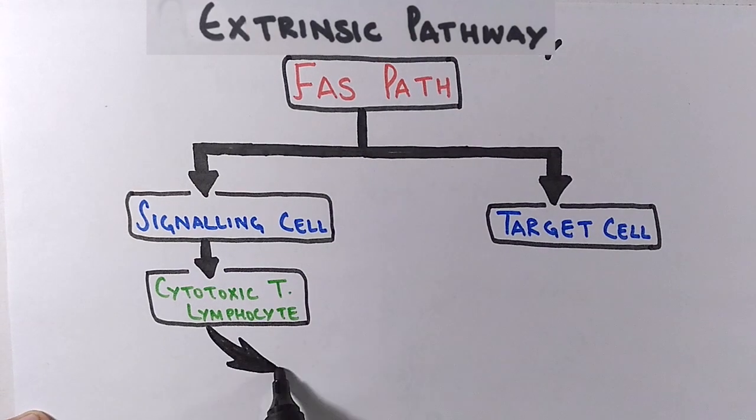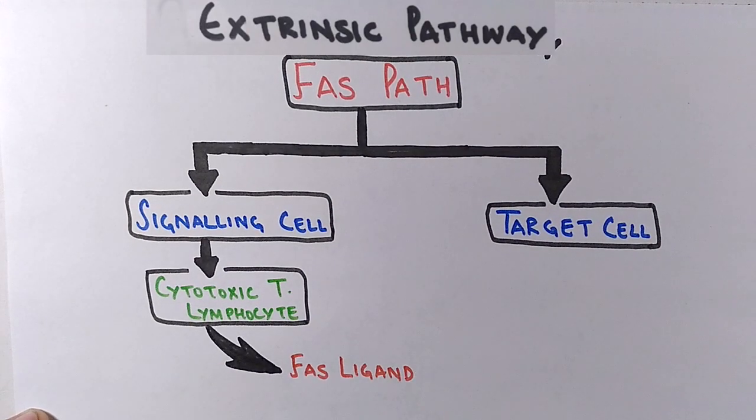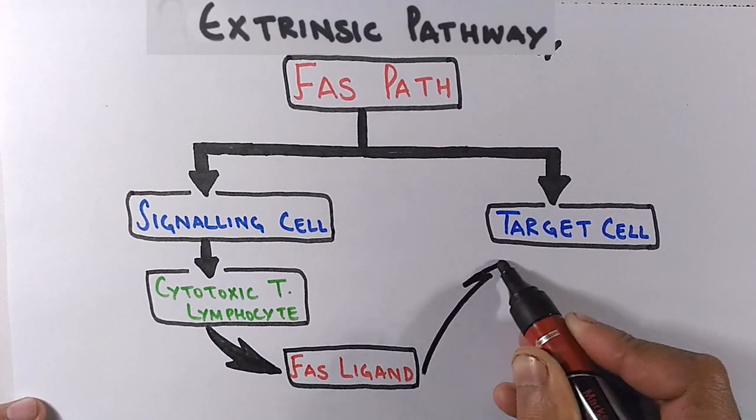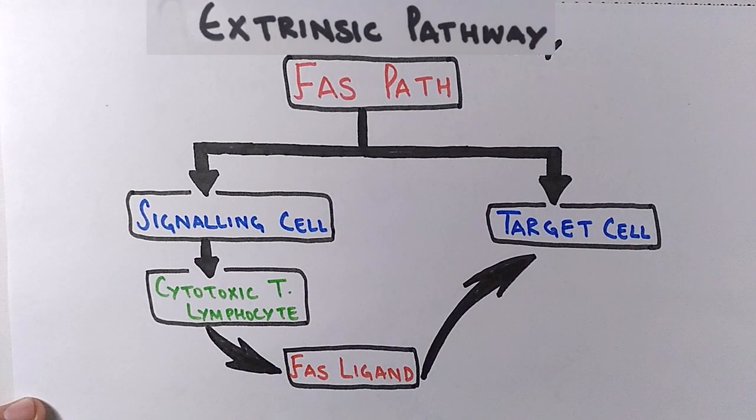The signaling cell is basically here the immune system cell, that's cytotoxic T lymphocyte. This cell expresses a protein called FAS ligand. FAS ligand is the first apoptotic signaling molecule and it's this ligand which initiates, which sparks the apoptosis through a series of reactions.